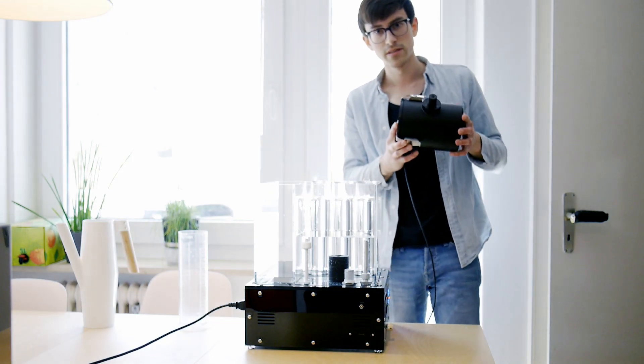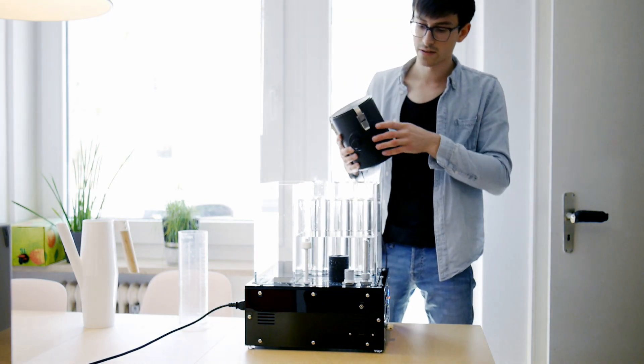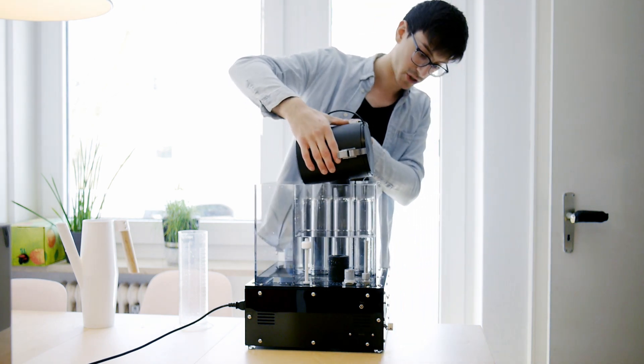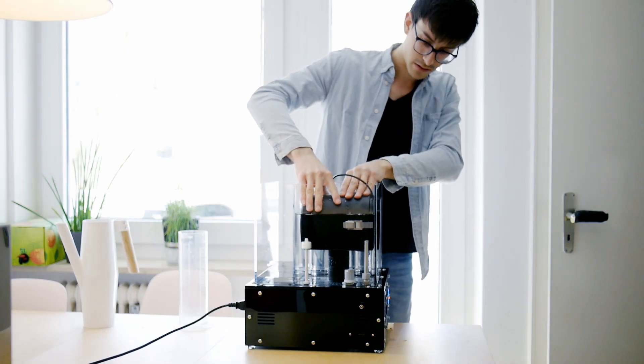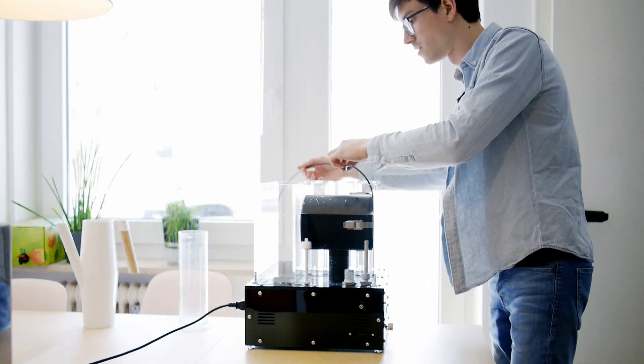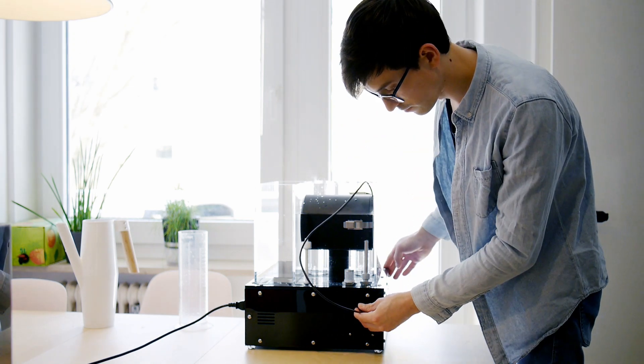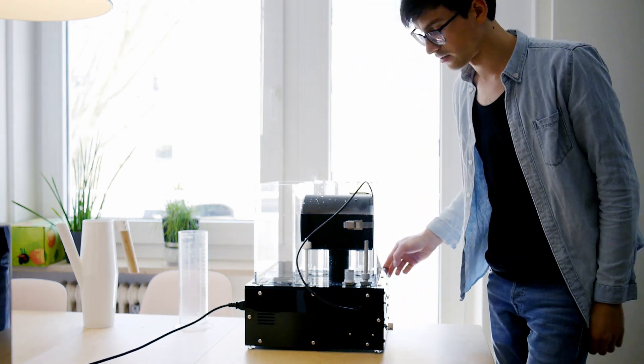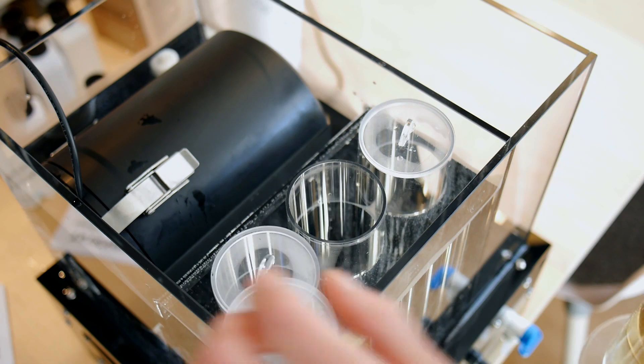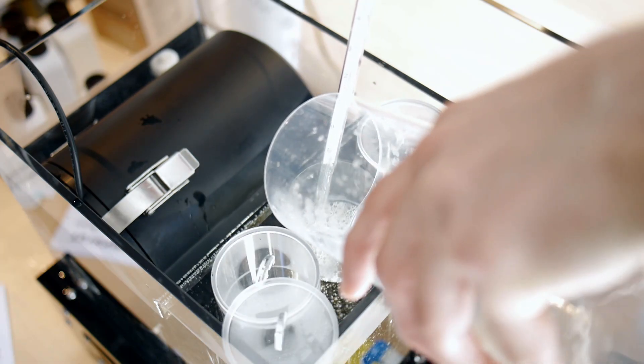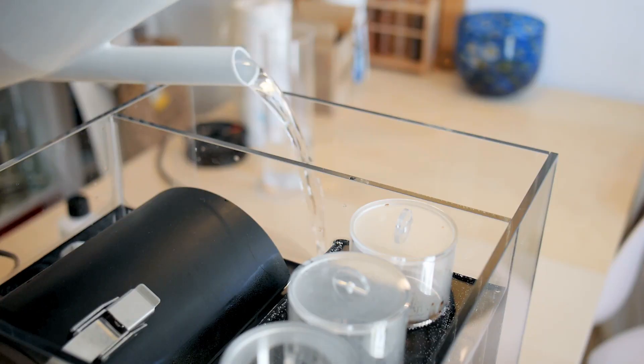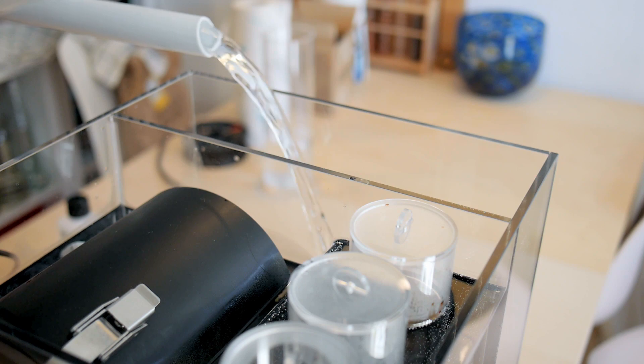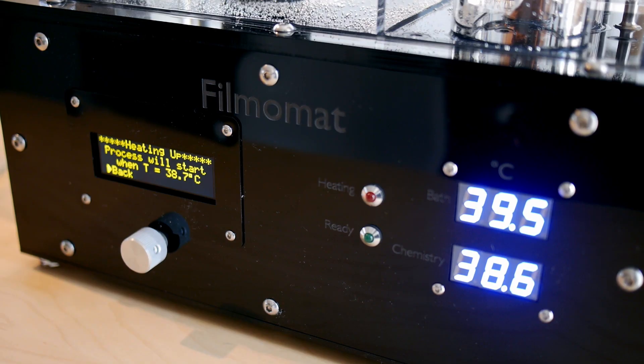All right, so the film is now loaded into the tank, and now I just connect this to the machine. And don't forget to connect the electrical cable to the Filmomat, and now it's ready. All what's left to do now is to fill in the chemistry and to fill in the rinsing water, and once the machine has reached the desired temperature it will start automatically.